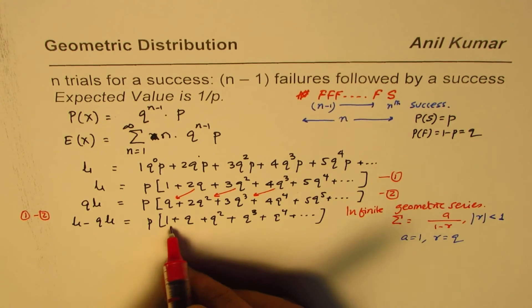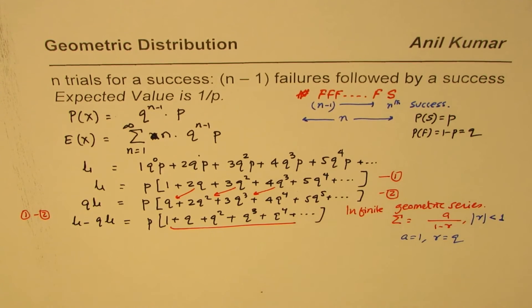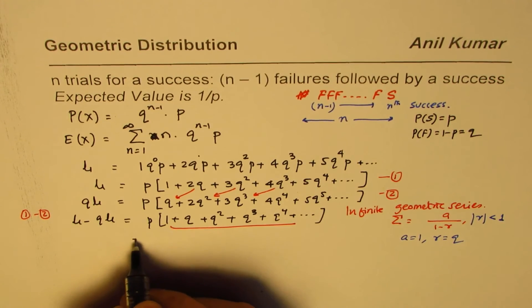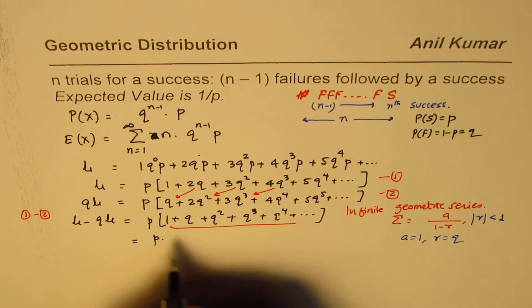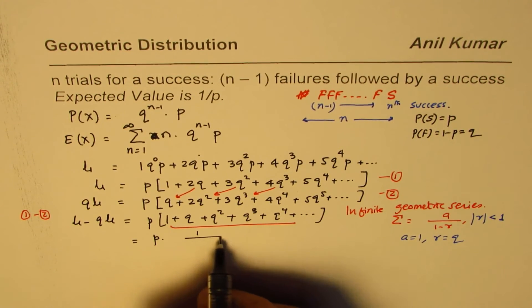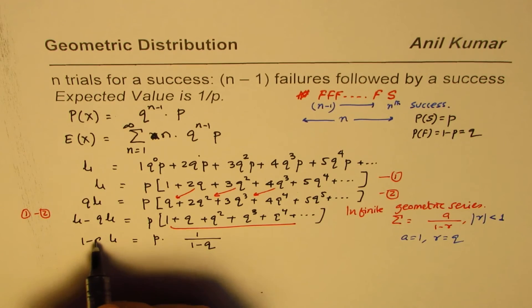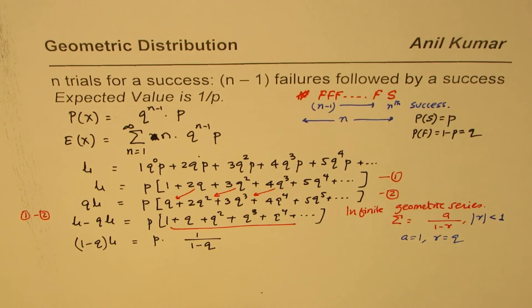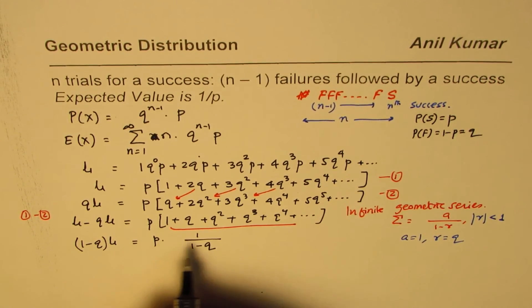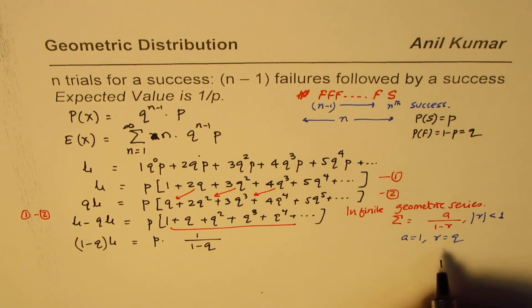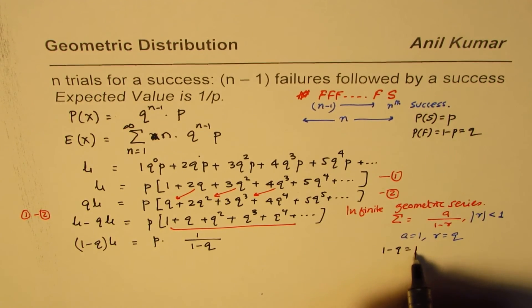So we can combine all these terms, which are part of the geometric series, and write this as P times 1 over (1 minus Q). On the left side, we can take μ common, we get (1 minus Q)μ. And 1 minus Q is P.